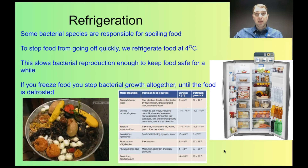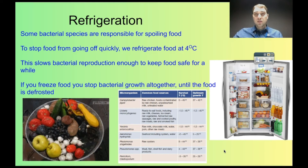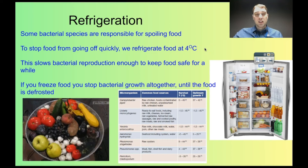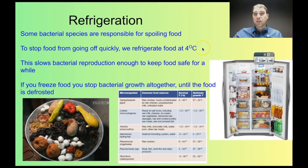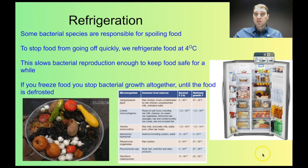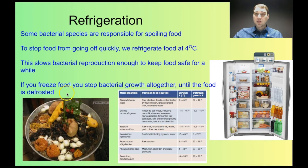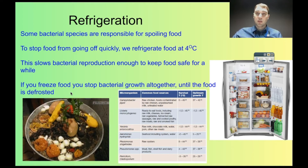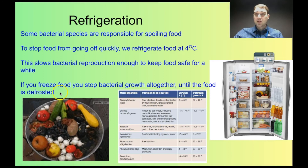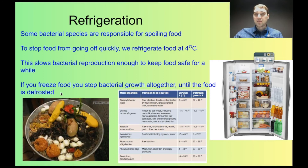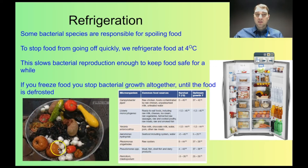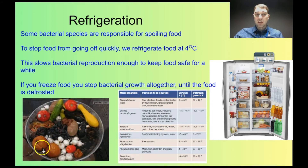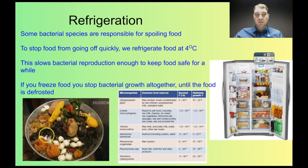Bacteria are really good at breaking down organic matter, and food is organic matter. So to stop food from going off, we refrigerate it at 4 degrees — that keeps it cold enough that the bacteria aren't growing very quickly. If you freeze food below zero degrees, most freezers are set at 20 degrees below zero, that stops bacterial growth in its tracks. But as soon as you defrost the food and get it back above zero degrees, the bacteria will start to reproduce again. Down here we've got some fruit that aren't being refrigerated, being broken down by bacteria and often fungi as well.